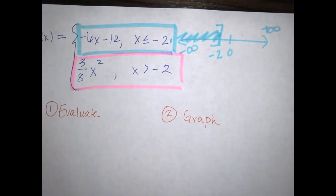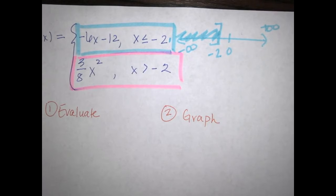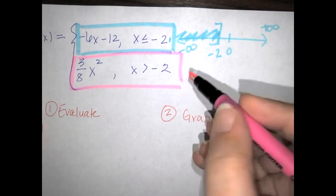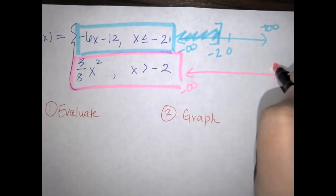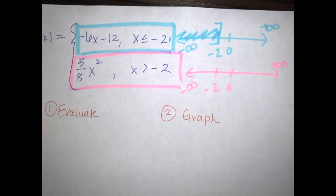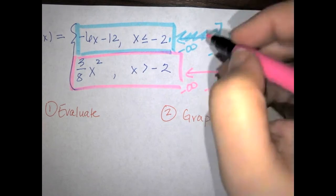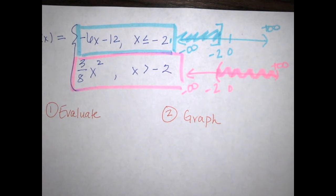The second equation is bounded for all values greater than negative 2. There's no equals sign, so negative 2 is not included. On its number line, starting at negative 2 with a parenthesis — since it's not included — we shade in the positive direction. We need to pay very close attention to bounds and what they're doing.